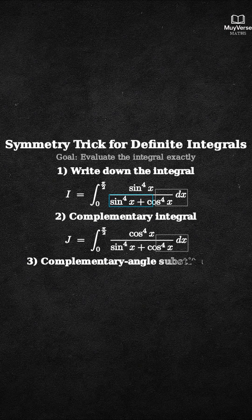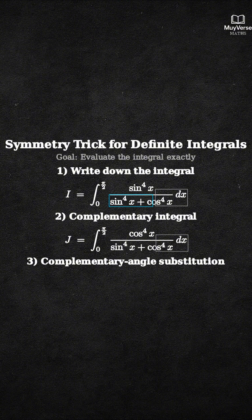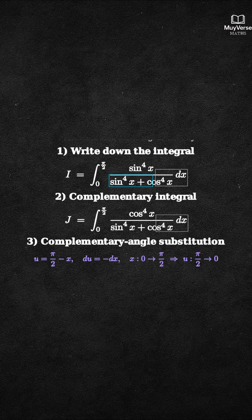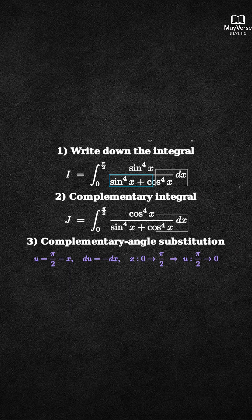Step 3: Use the complementary angle substitution in J. Let u equal pi over 2 minus x. Then du equals negative dx, and the limits flip. When x equals 0, u equals pi over 2, and when x equals pi over 2, u equals 0.